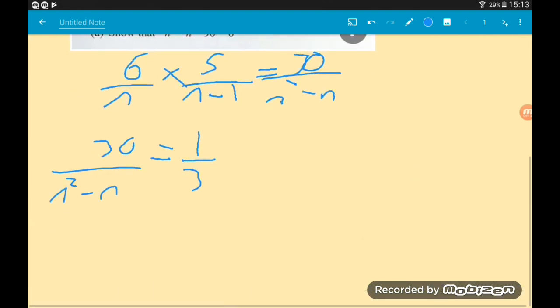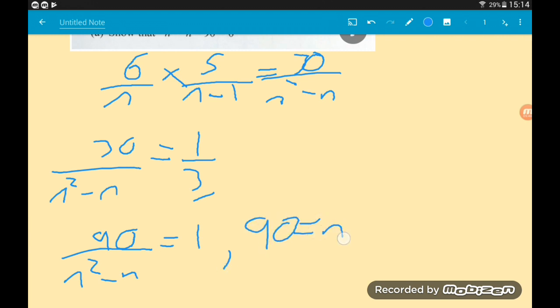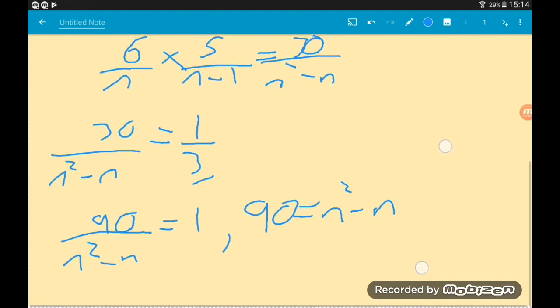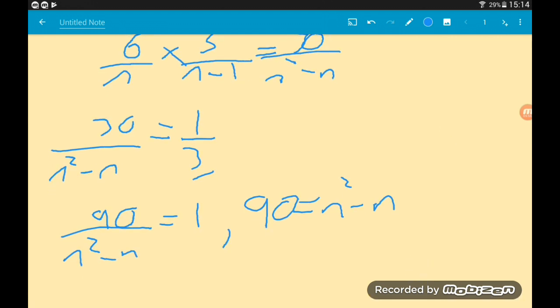We don't really want fractions involved. The first thing I would do here is multiply by this three. So we would get 90. Hello, there's our 90. We would get 90 over n squared minus n is equal to one. We would then multiply by n squared minus n, which would give us 90 equals n squared minus n. We've got everything we need here. We just need to go on the same side together. We take away the 90, and that will give us n squared minus n minus 90 equals zero. There we go, we've proven what we've been asked to prove.